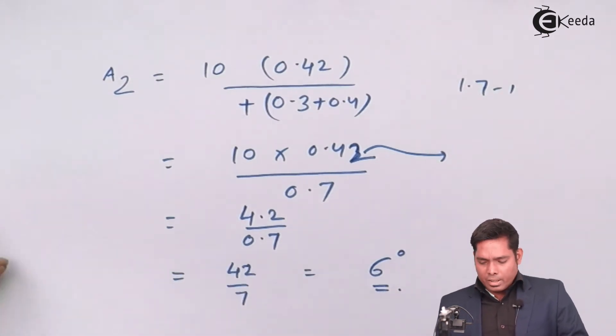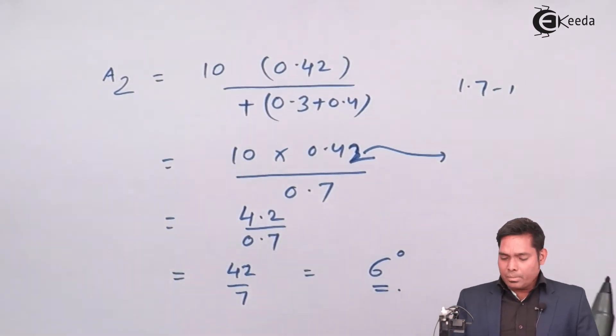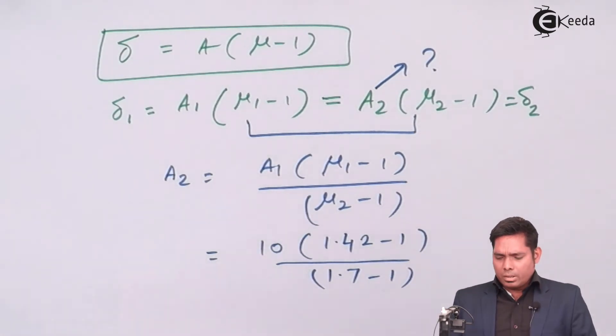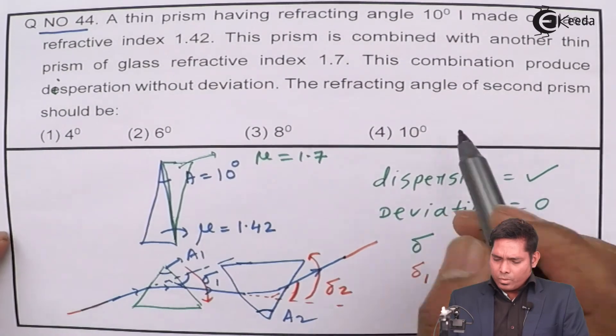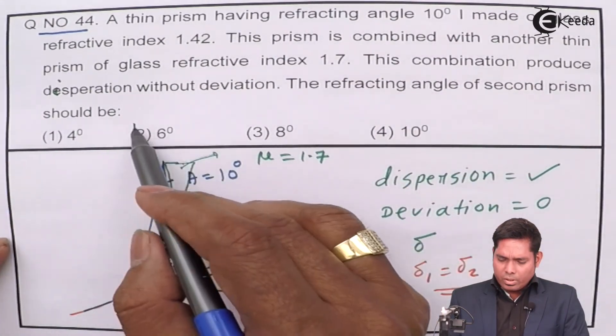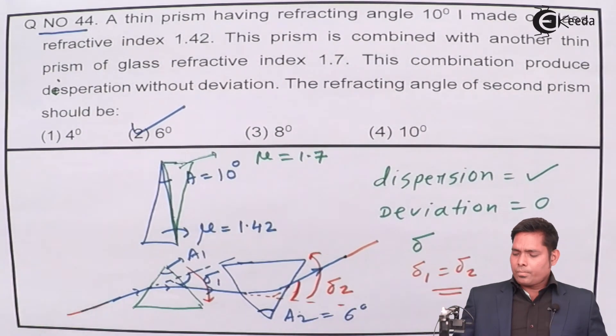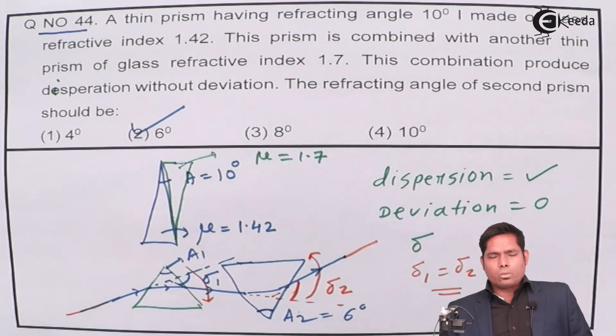Finally, we are getting angle of the second prism, refracting angle of the second prism is 6 degrees. This is the correct answer. So that is the answer to this question. Thank you.